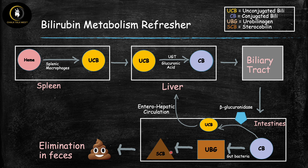Most conjugated bilirubin is eliminated through feces, but a small amount that lingers in the intestines long enough becomes deconjugated by the enzyme beta-glucuronidase, found on the brush border. The name tells you what it does — glucuronidase removes glucuronic acid — so it goes from conjugated back to unconjugated bilirubin. The unconjugated bilirubin in the small intestines doesn't stay there; it gets reabsorbed and returned to the liver through enterohepatic circulation.